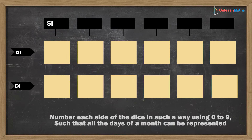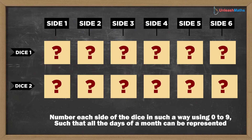In this way, what numbers will you put on all faces of both the dice to be able to represent numbers from 1 to 31? Pause the video here and think logically about what should be the solution.